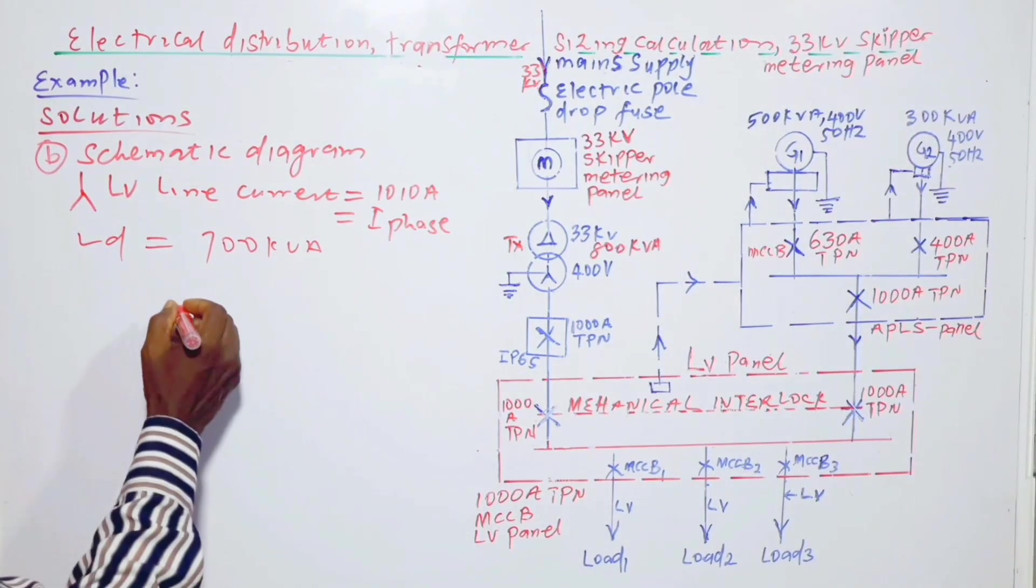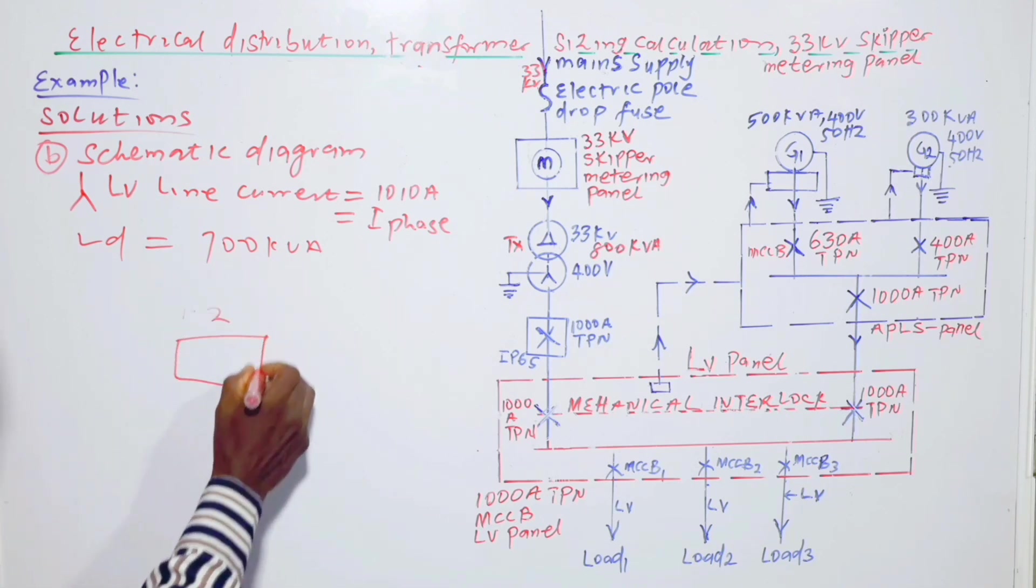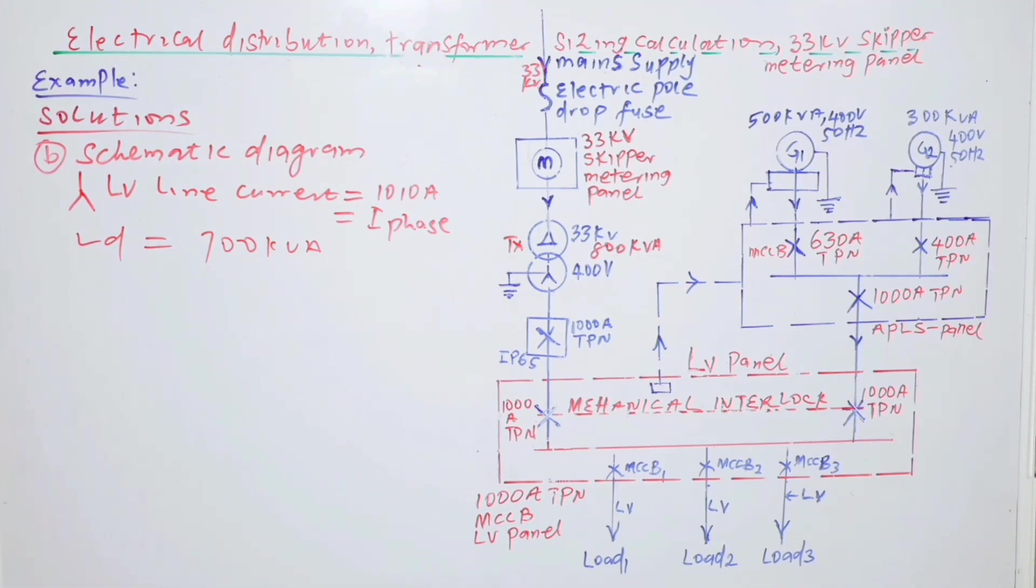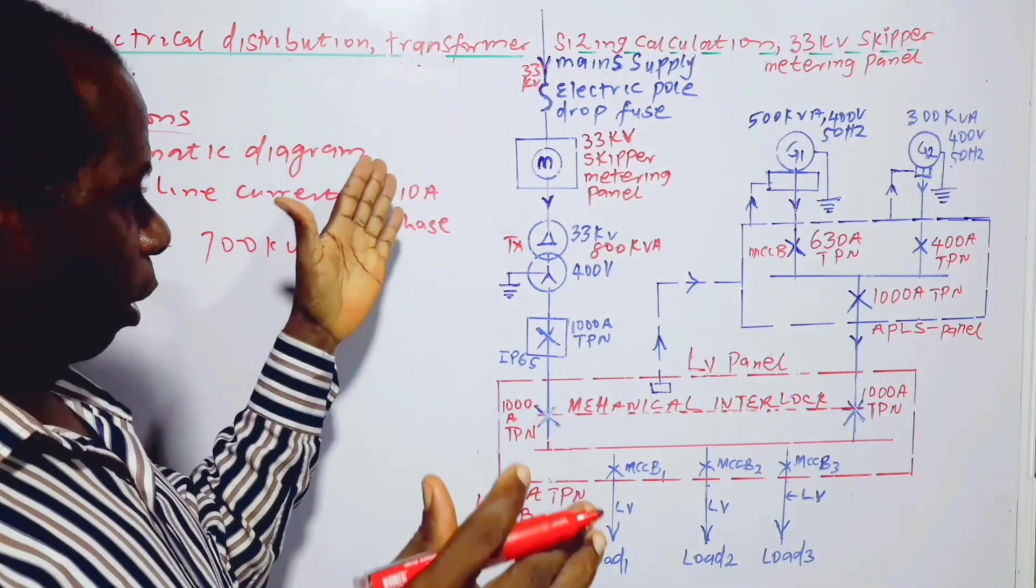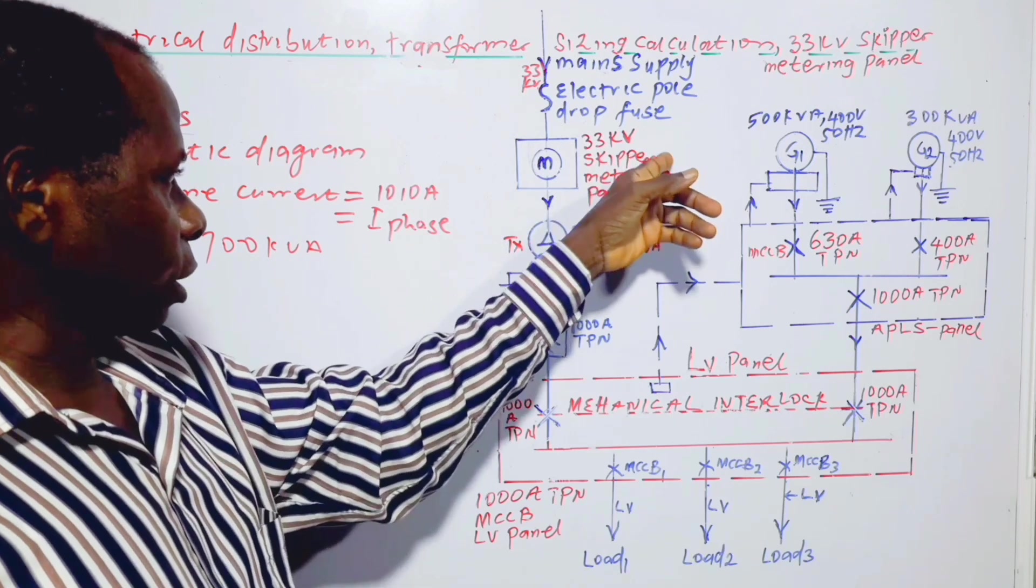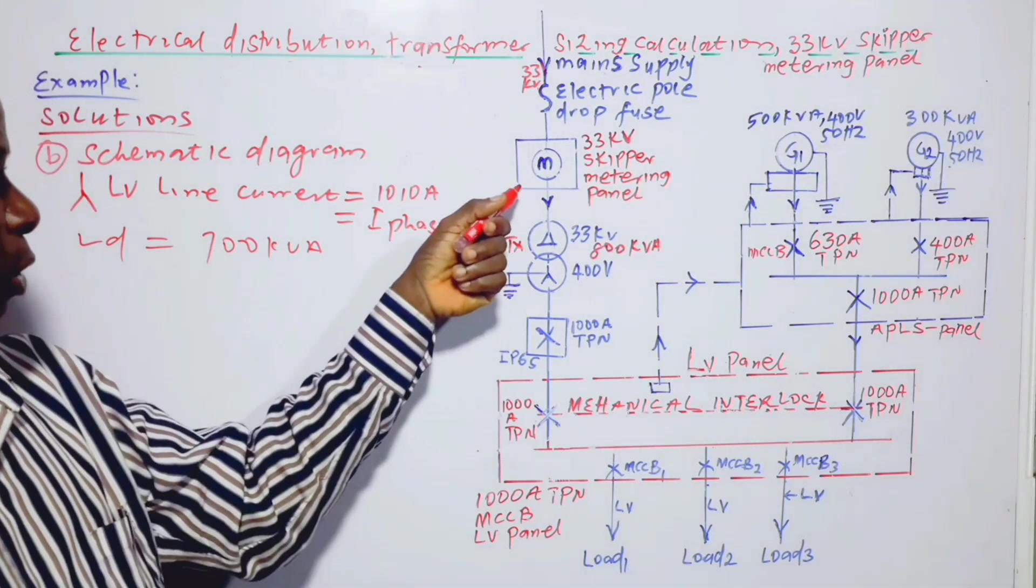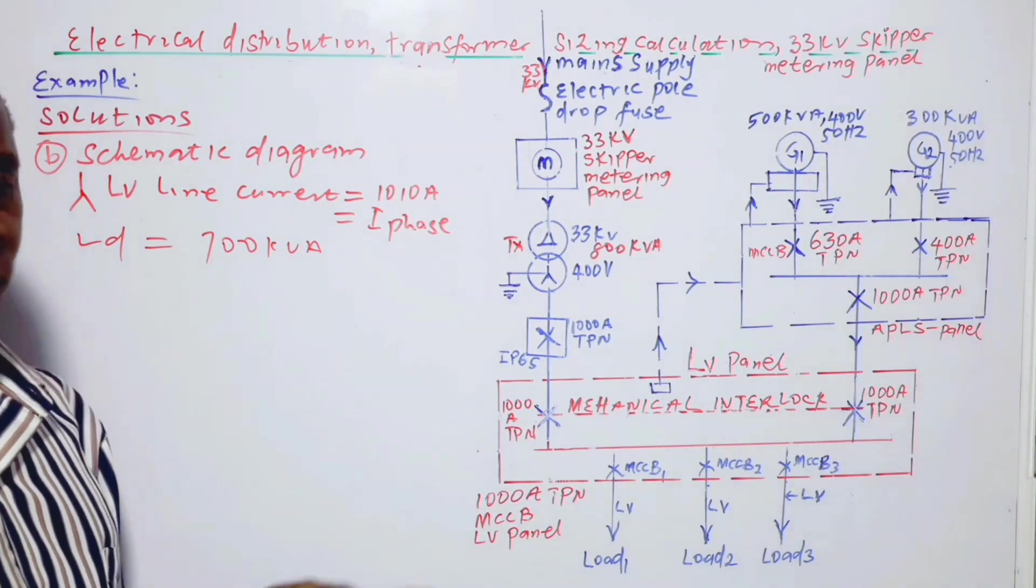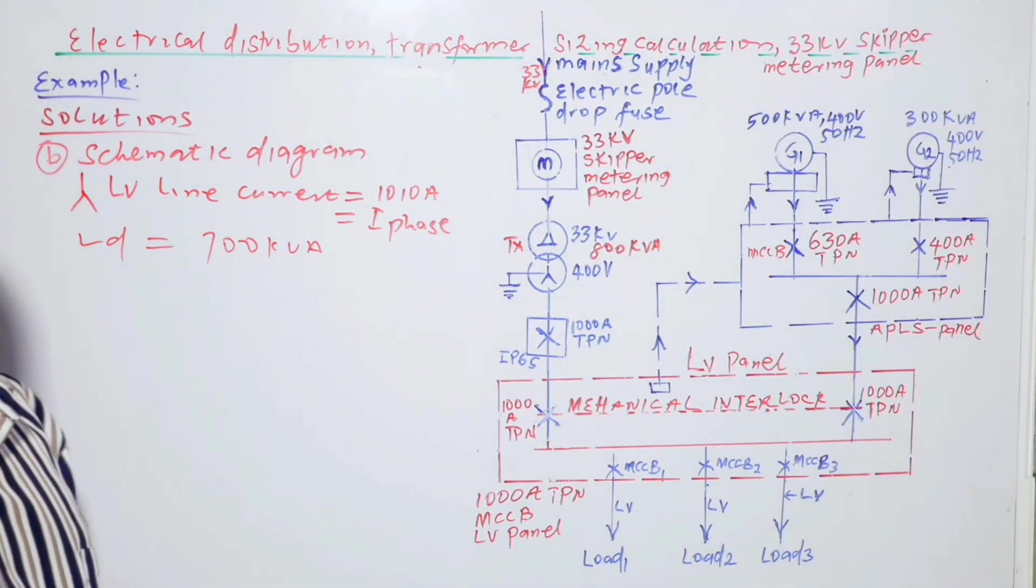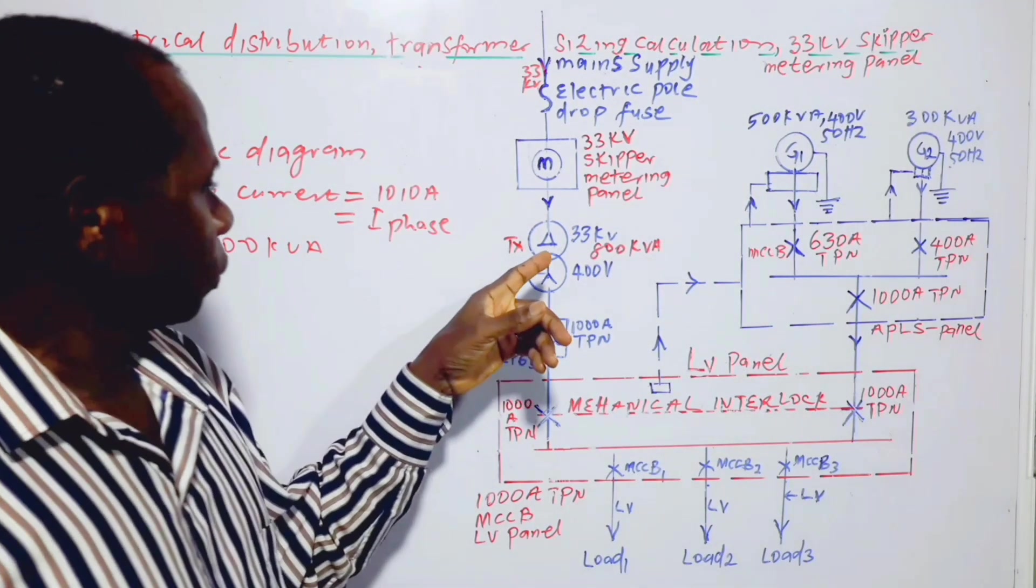So this one, the dimension is just about 1.2 by 1.2 by 1.2 meter in height as well. So it's a very small panel. The skipper, this skipper, the word skipper is the name of the manufacturer or the metering panel, which is the panel is common in some areas or in some parts of West Africa.